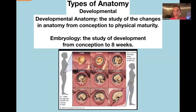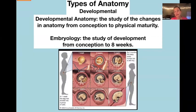Developmental anatomy is the study of changes in anatomy from conception to physical maturity — around age 20 or so. Embryology is the study of development from conception to eight weeks, which is when the most remarkable changes occur. After eight weeks you're no longer an embryo; you're officially a fetus.